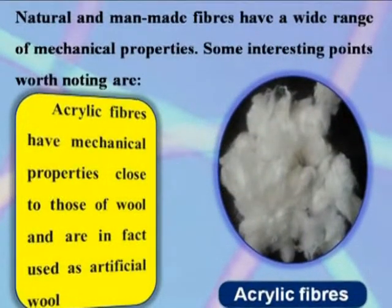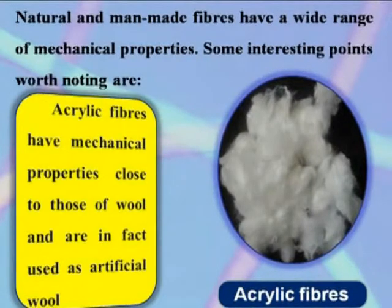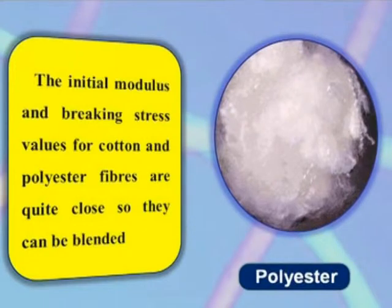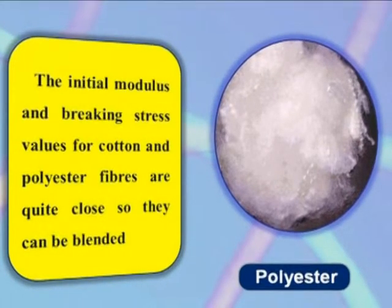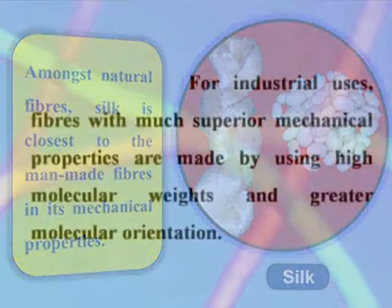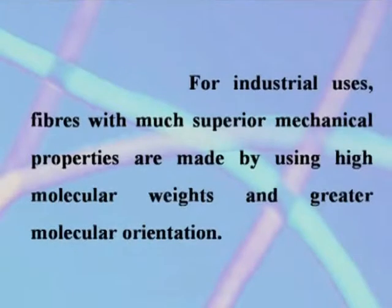Natural and man-made fibers have a wide range of mechanical properties. Some interesting points are: acrylic fibers have mechanical properties close to those of wool and are in fact used as artificial wool. The initial modulus and breaking strength values of cotton and polyester fibers are quite close, so they can be blended. Amongst natural fibers, silk is closest to man-made fibers in its mechanical properties. For industrial uses, fibers with much superior mechanical properties are made by using high molecular weights and greater molecular orientation.